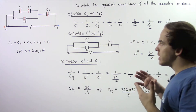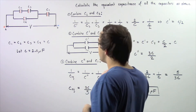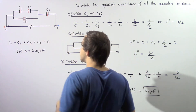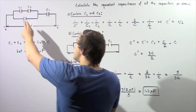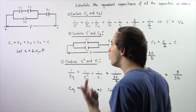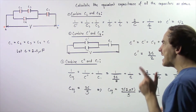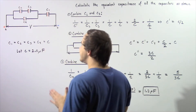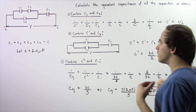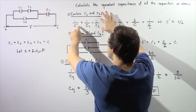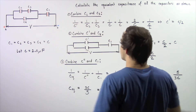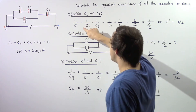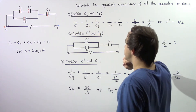We're going to break this problem down into three steps. In step one, we examine capacitor number two and capacitor number three, and combine them into a single equivalent capacitor with capacitance C prime. Because these two capacitors are in series relative to one another, we use the equation: one divided by C prime is equal to one divided by C2 plus one divided by C3.